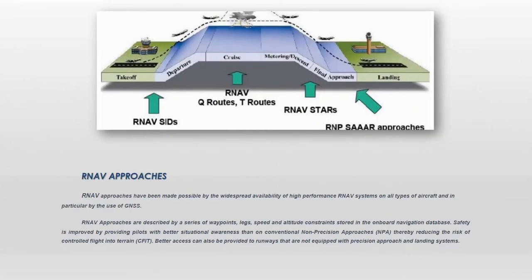R-NAV approaches have been made possible by the widespread availability of high-performance R-NAV systems on all types of aircraft, and in particular by the use of GNSS. R-NAV approaches are described by a series of waypoints, legs, speed and altitude constraints stored in the onboard navigation database. Safety is improved by providing pilots with better situational awareness than on conventional non-precision approaches, thereby reducing the risk of controlled flight into terrain. Better access can also be provided to runways not equipped with precision approach and landing systems.